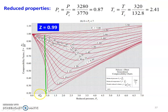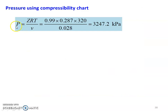With P_R = 0.87 and T_R = 2.41, we locate the point on the compressibility chart. On the x-axis, 0.87 lies between 0.5 and 1.0. The temperature lines are 3.5, 2.5, and 2.0; our value of 2.41 falls between 2.5 and 2.0. Reading from the chart, the compressibility factor Z = 0.99. Using this Z value, pressure P = ZRT divided by V = 0.99 into 0.287 into 320 divided by 0.028 = 3,247.2 kilopascal.